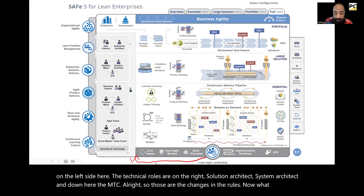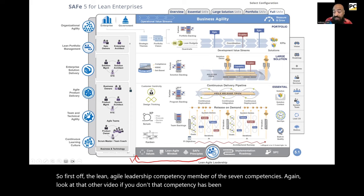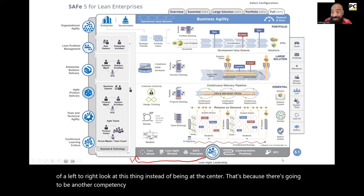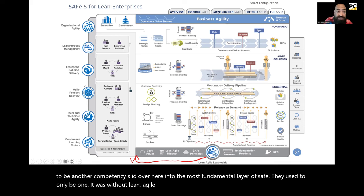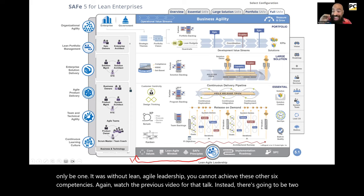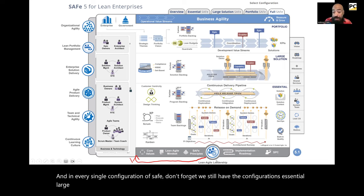Let's look at the bottom bar. The Lean-Agile Leadership competency — one of the seven competencies — has been slid to the left to kick off a left-to-right look instead of being at the center. That's because there's going to be another competency slid over into the most fundamental layer of SAFe. There used to only be one. Now there are two competencies that are fundamental and in every single configuration of SAFe — essential, large solution, portfolio, and full — instead of one. That's a massive change.